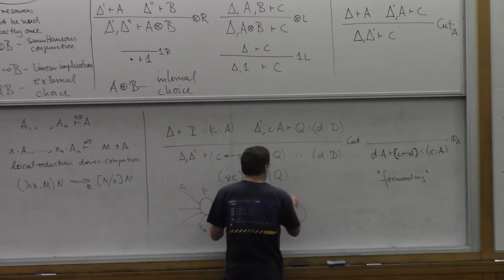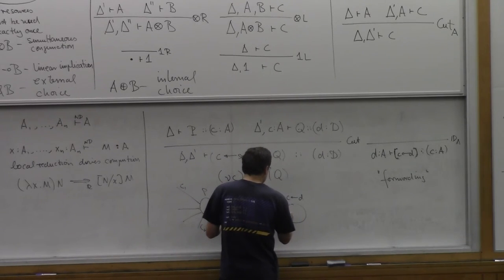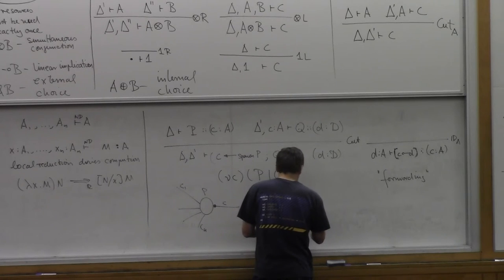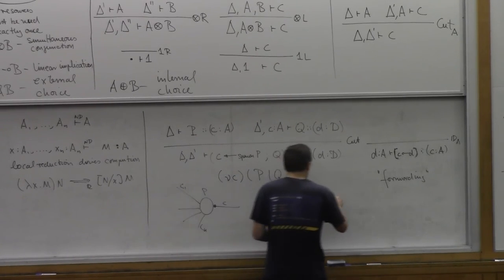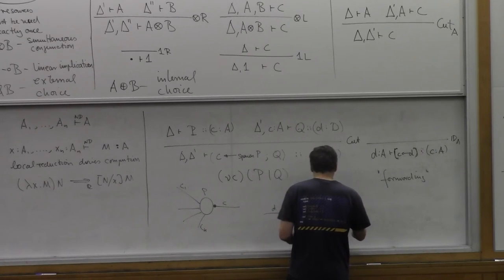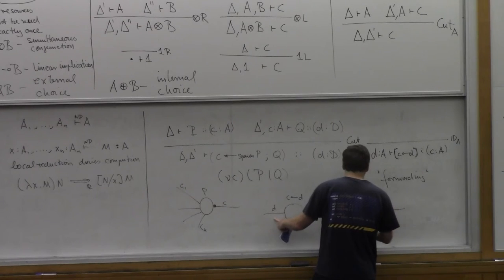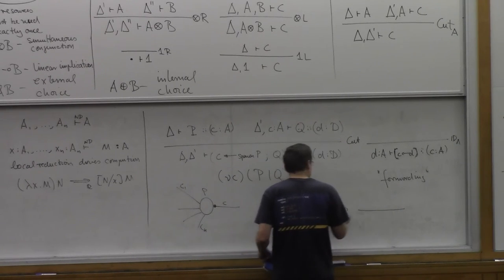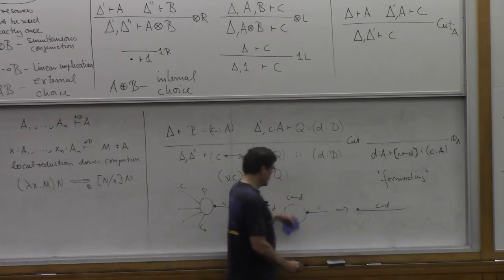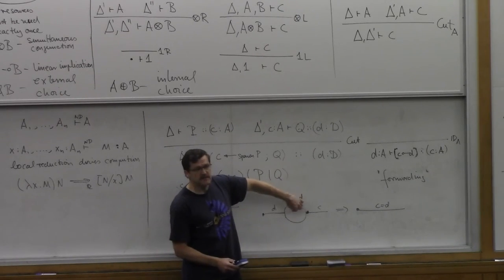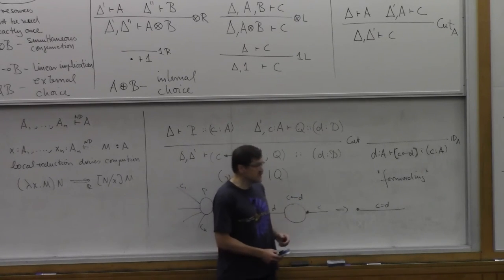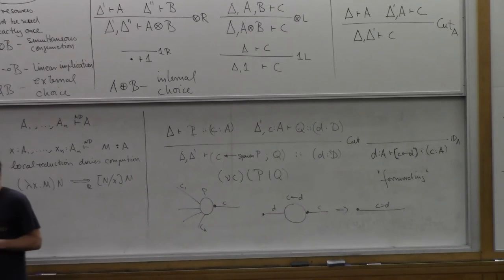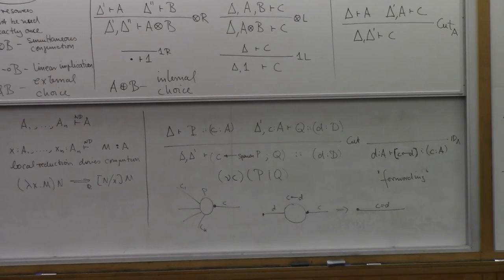So in cut we spawn a new process and with the identity we terminate the process. So they're kind of inverses of each other which is a well-known sort of theme in proof theory that cut and identity are inverses. So in a picture, I usually draw processes P like this. It uses many channels and it provides one channel over here.